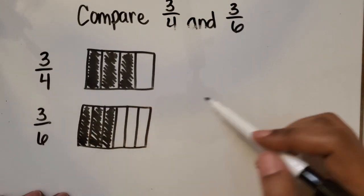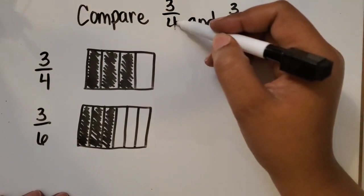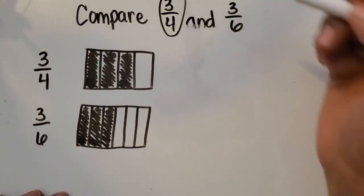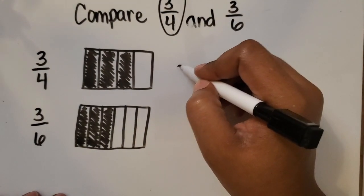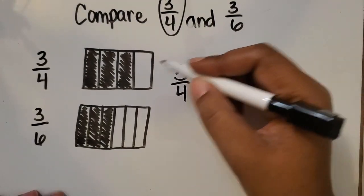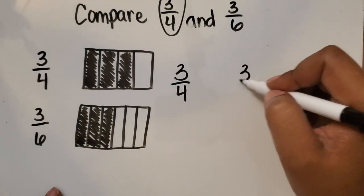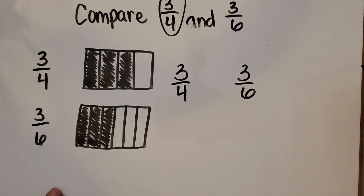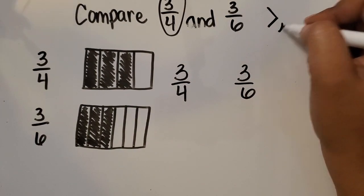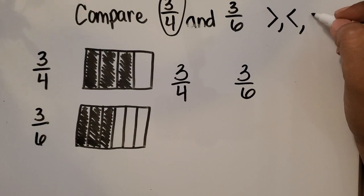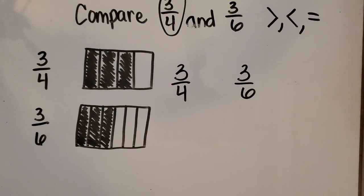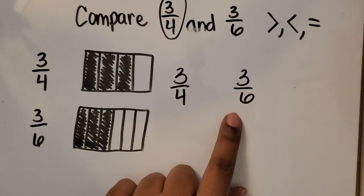So now we can write our comparison statement. We know that 3 fourths is the greater fraction, so we're going to start with 3 fourths - that was our first fraction. And then here goes 3 sixths. So which comparison symbol are we going to place between our two fractions?